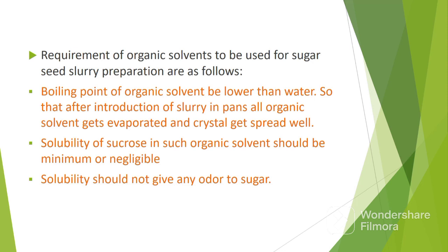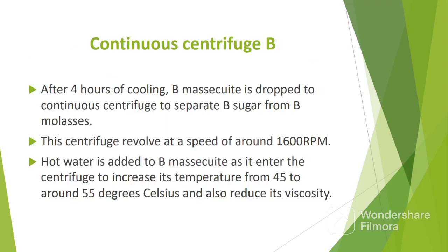The requirements of an organic solvent to be used for seed slurry preparation are: Number 1 — the boiling point of the organic solvent should be lower than the boiling point of water, so that after introduction of the slurry, all organic solvent gets evaporated and crystals get spread well in the pan. Number 2 — solubility of sucrose in such organic solvent should be minimum or negligible. Number 3 — the solvent should not give any odor to the sugar.